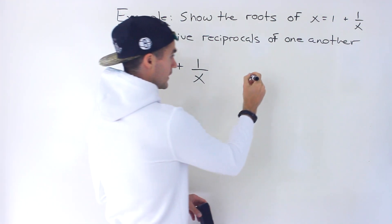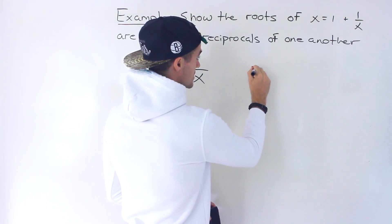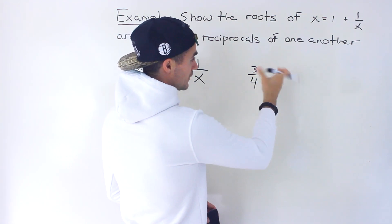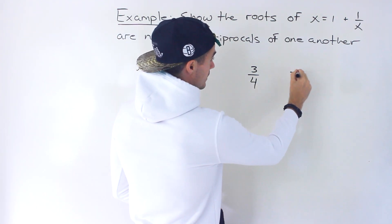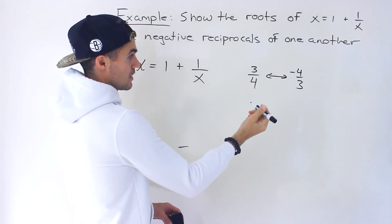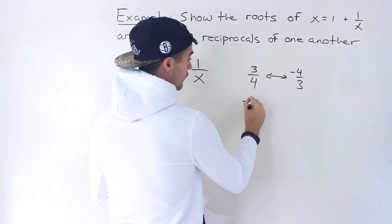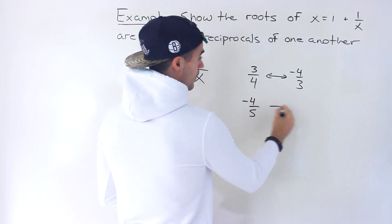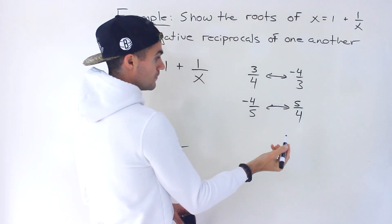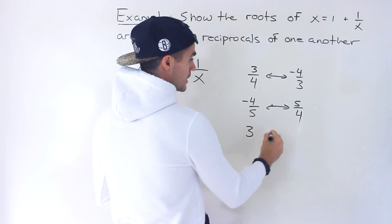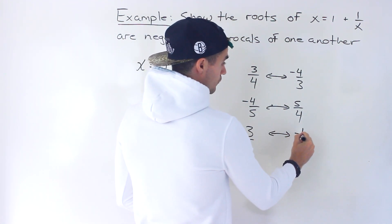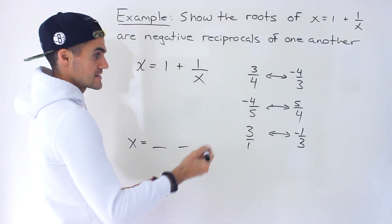Just to do a quick review of what negative reciprocals are: if I have 3 over 4, we flip it and switch the sign, so it ends up being negative 4 over 3. Both of these are negative reciprocals of one another. Or if we have negative 4 over 5, we flip it, change the sign, it would be positive 5 over 4. Or if we have 3, which is over 1, the negative reciprocal would be negative 1 over 3.